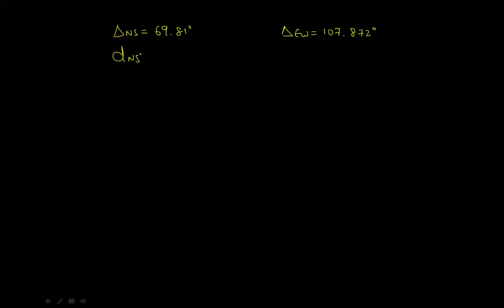So the north-south distance is going to be 2π times the radius of the earth times delta north-south all divided by 360 degrees. If you go through the calculation, you will get DNS as 7,762.517 kilometers. It's the same calculation for east-west, except instead of delta NS, you would input delta east-west. If you do that calculation, you would get DEW as 11,994.819 kilometers.